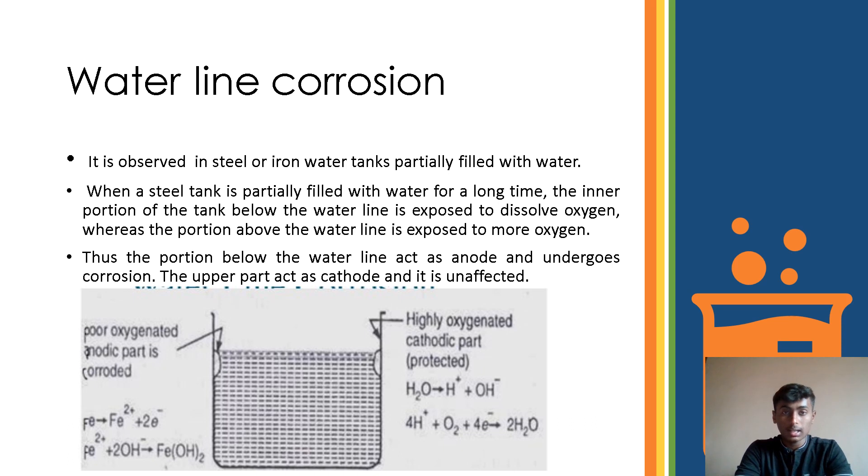Above the water level, half of the portion of the tank is a cathode part, which is the area not undergone corrosion, or you may call it an unaffected area. Here the anode part only is affected by the corrosion.